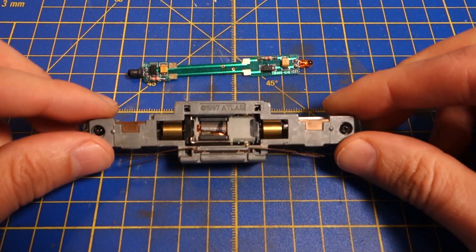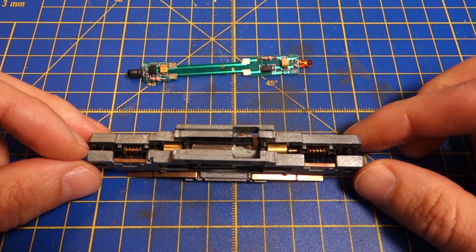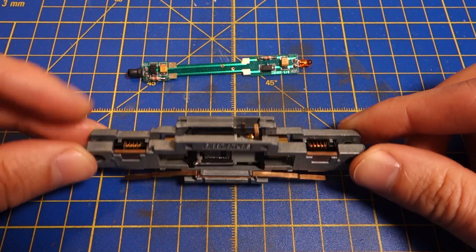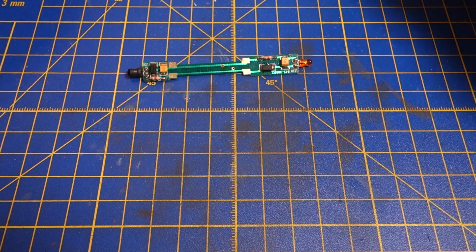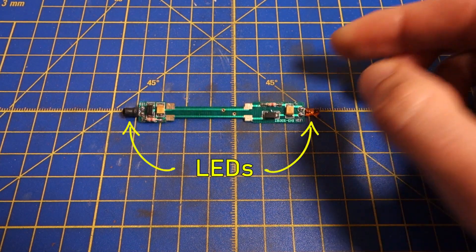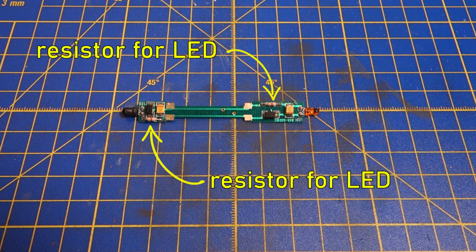Sometimes it's possible to get the board out by loosening the screws that keep the frame halves together just a little without the mechanism falling apart. The analog lightboard has the LEDs for the headlights plus all the necessary connections on it.